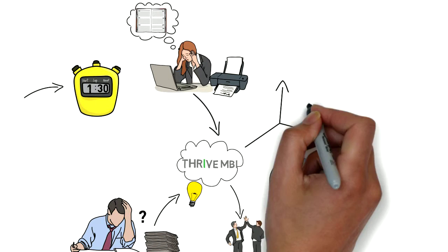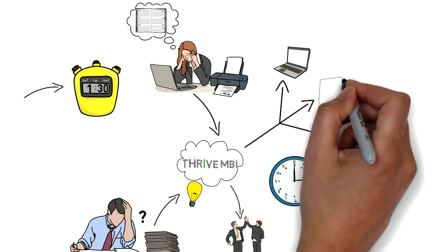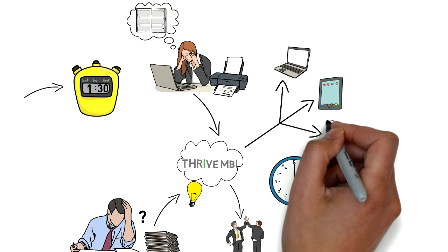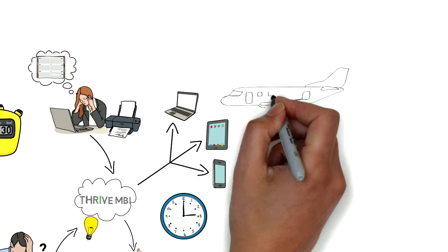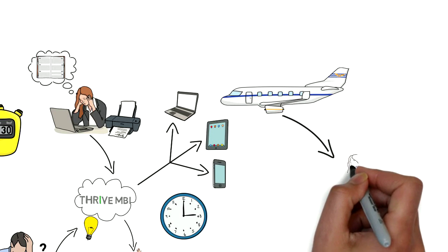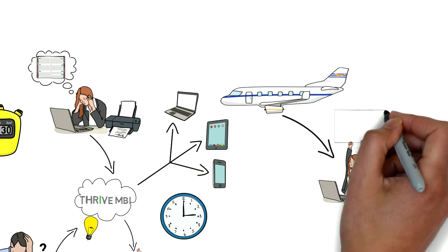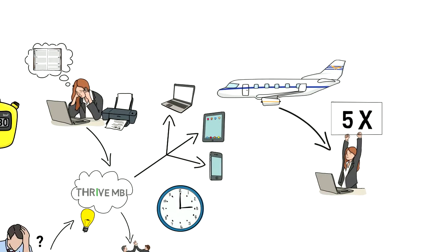With Thrive MBI, your data is automatically updated every 15 minutes on your PC, tablet, and phone, keeping you up-to-date wherever you are. That's it. On average, within the first 30 days of use, our clients see a 5x return on investment.